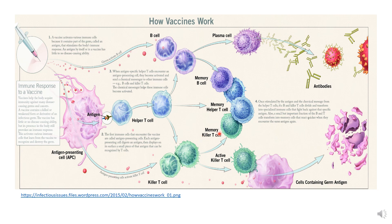And memory killer T cells. So when you are exposed to an infectious pathogen, these memory T cells are now amped and reactivated much quicker than a naive T cell, and they can come in quickly and eliminate the pathogen.